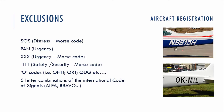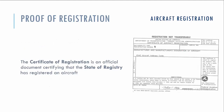There are some exclusions for registration marks. We cannot use special designated Morse codes for distress, urgency, or safety. We also cannot use Q codes like QH or QT and so on. It is also not permitted to use five-letter combinations from the international code of signals, such as Alpha, Bravo, Charlie, Delta, and so on. There is a special registration certificate standardized by ICAO.